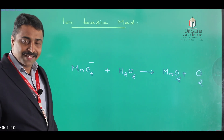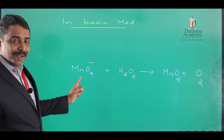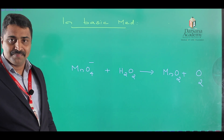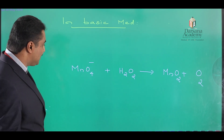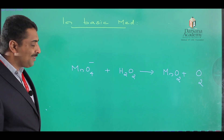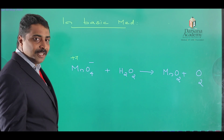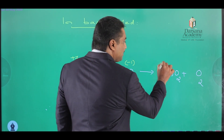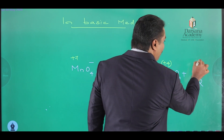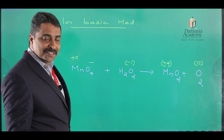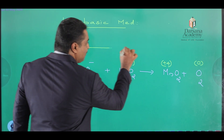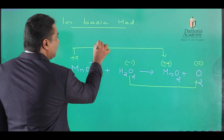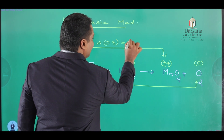When we move to basic medium, the example given is: permanganate ion reacts with hydrogen peroxide to give manganese dioxide and oxygen. First, identify the change in oxidation state. The oxidation state of manganese in permanganate ion is +7, and in manganese dioxide it is +4, so ΔOS for manganese equals 3. In hydrogen peroxide, the oxidation state of oxygen is −1, and in O₂ it is 0, so ΔOS equals 1 per oxygen atom, but since there are 2 oxygen atoms in H₂O₂, the total ΔOS equals 2.